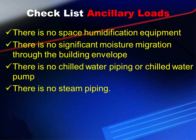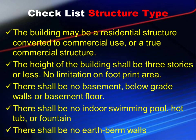Ancillary loads: there is no space humidification equipment, no significant moisture migration through the building envelope, no chilled water piping or chilled water pump, and no steam piping. Structure type: the building may be a residential structure converted to commercial use or a true commercial structure. The height shall be three stories or less with no limitation on footprint area. There shall be no basement, below-grade walls, basement floor, indoor swimming pool, hot tub, fountain, or earth berm walls.